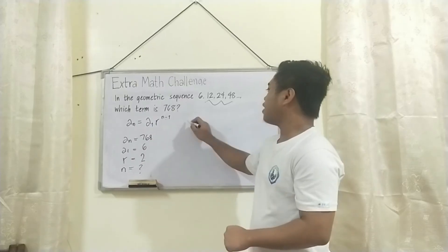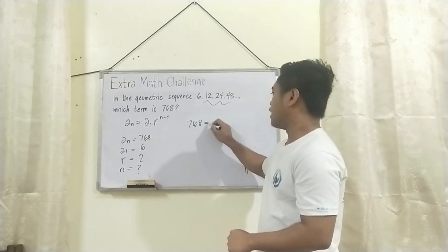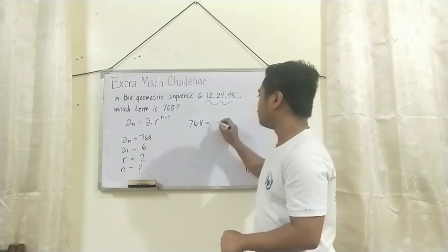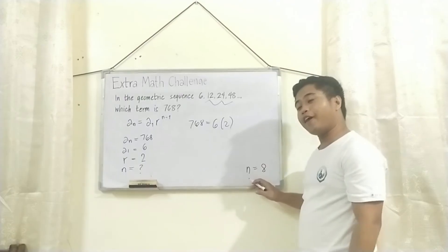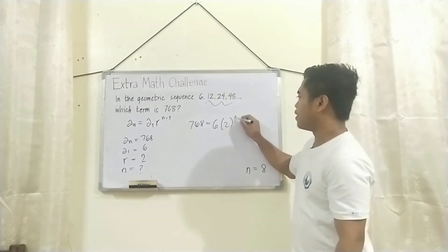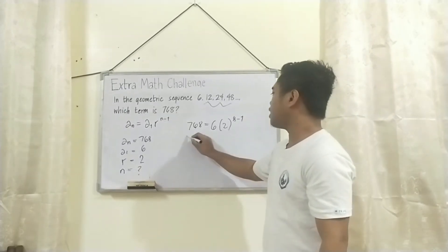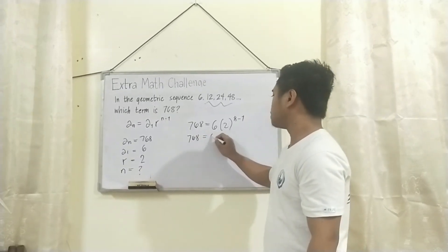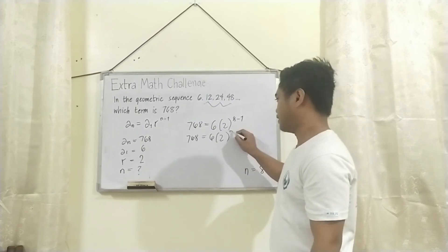So, we'll have 768 as the a sub n. And this is equal to a sub 1, we'll have 6. Common ratio is 2. And raised to what is the value of n? 8. So, we'll have 8 minus 1 kasi n minus 1. Now, we'll have 768 is equal to 6 times 2 raised to 8 minus 1, we'll have 7.